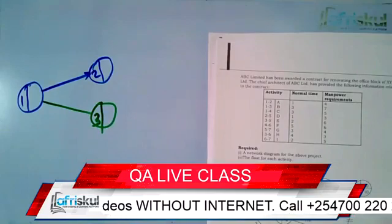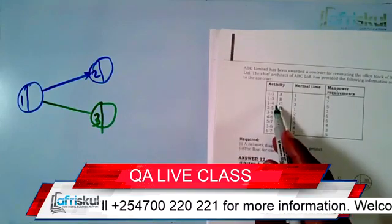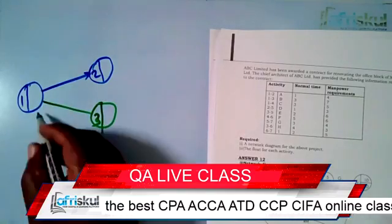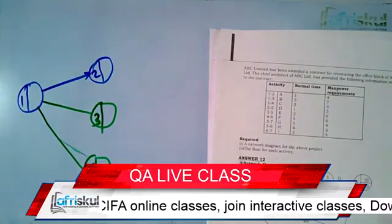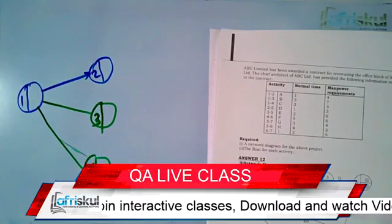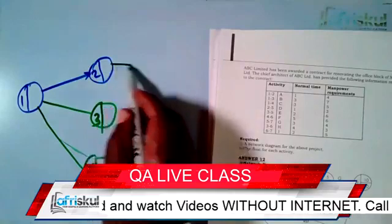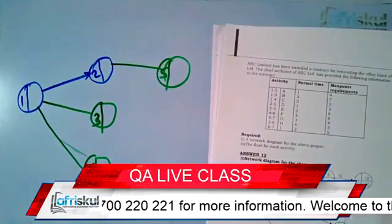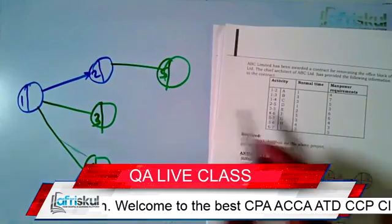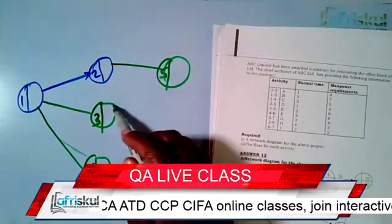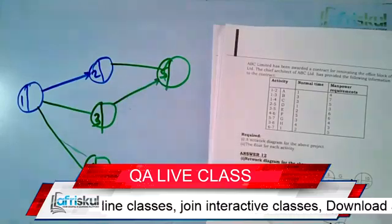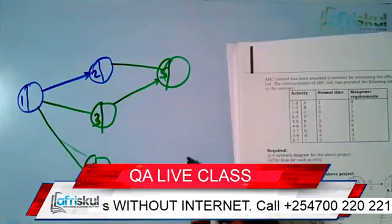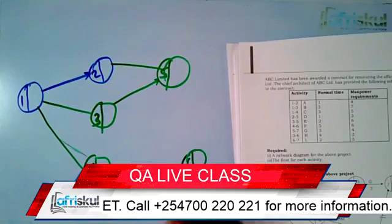We have one to three, then one to four — I introduce a fourth node. After that, we have two to five, so I introduce node five. Then three to five — three and five already exist, so I simply join them. Then four to six — I introduce a sixth node.